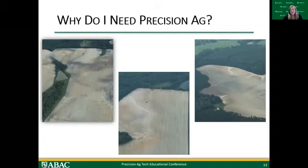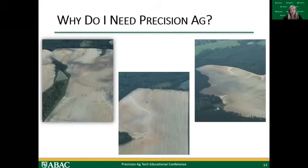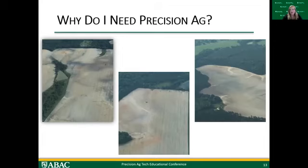Looking at these pictures, a couple of things jump out. First, field shapes — we've got super irregular field shapes; we don't have nice square fields like in the Midwest. Next, we can see quite a bit of variability: differences in soil types, drainage areas, erosion, and topography that change across the field. With those changes, it makes sense to manage these areas differently, not the same across the entire field. These pictures really point out why we need Precision Ag to make the most with the least amount of inputs.